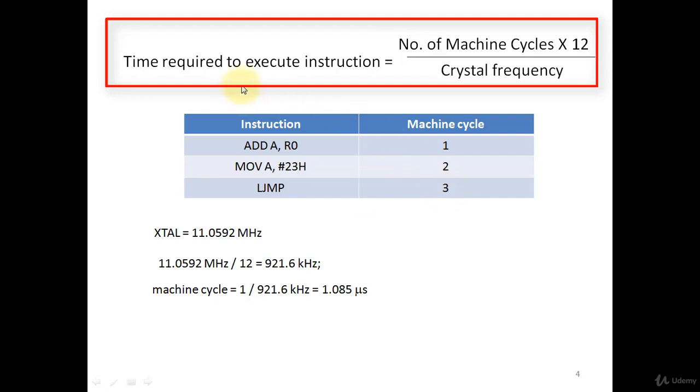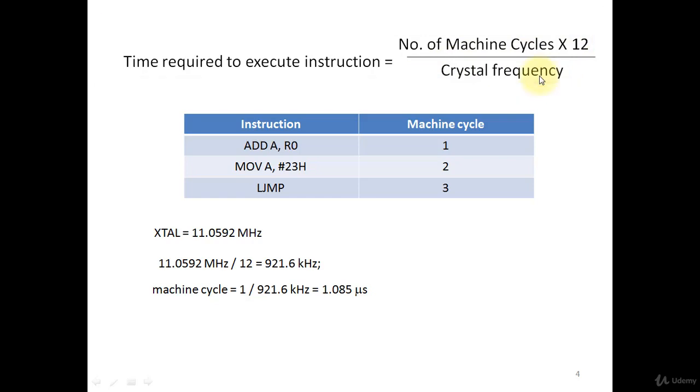Time required to execute the instruction can be calculated using this formula: Number of machine cycles multiplied by 12 divided by crystal frequency. In 8051 microcontroller, crystal frequency is the operating frequency which is 11.0592 MHz. Using above mentioned formula, you can easily find out one machine cycle equals to 1.085 microsecond.